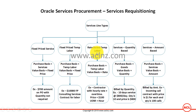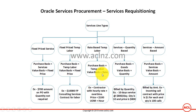Rate Based Temp Labour is something like a time and material labour arrangement. Here the purchase basis is Temp Labour whereas the value basis is Rate. The rate could be $100 an hour or $800 a day plus overtime. That rate is applied in relation to temporary labour — in other words, for a contractor. In this case there is no fixed scope.